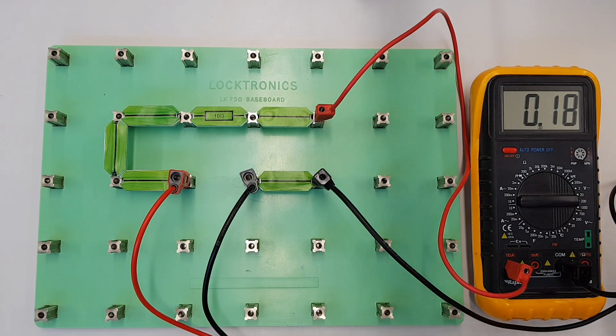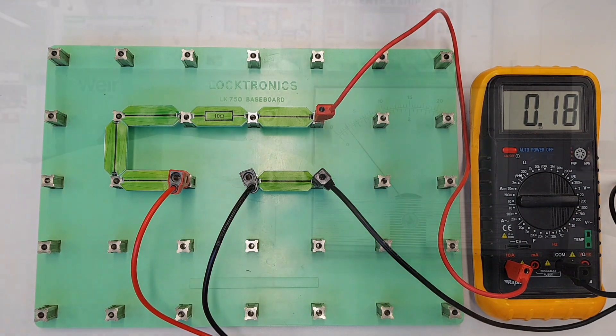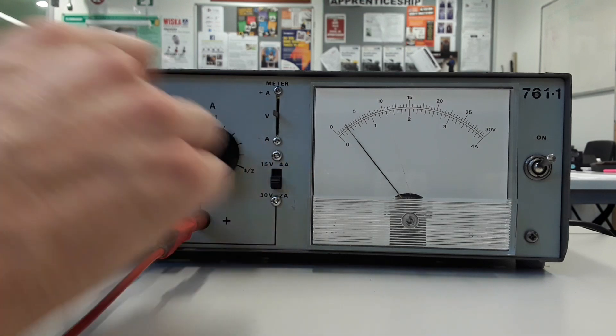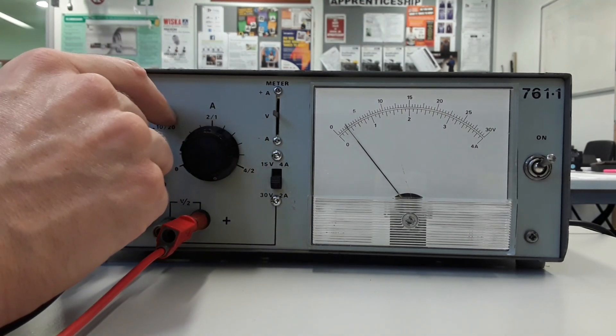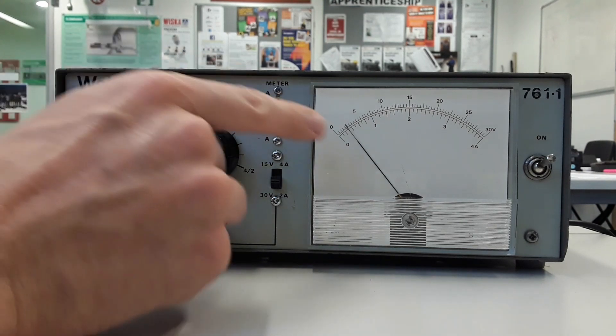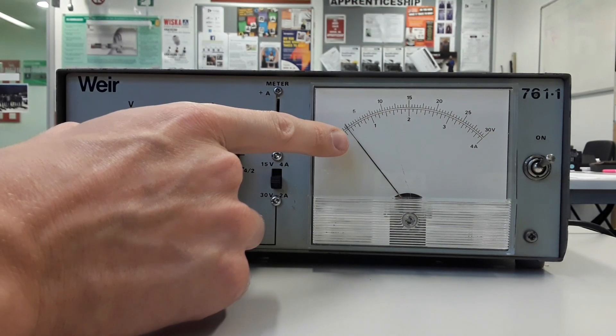What we're now going to do is we're going to look at what happens as we increase the voltage. So what we'll do now is we'll change our voltage from our power supply here. So I'm going to increase the voltage. Now we won't worry too much about what the exact value is here but you'll see from this needle that I'm going to increase the voltage.